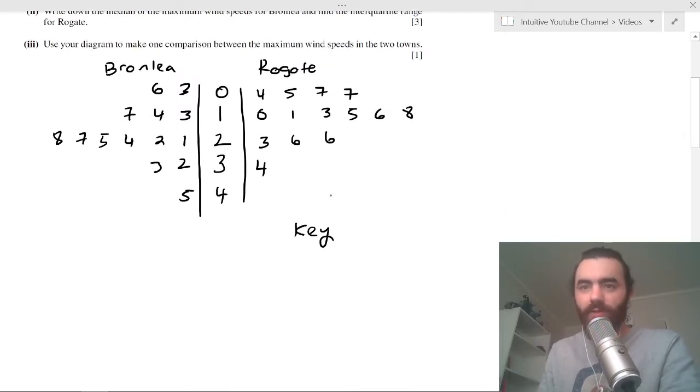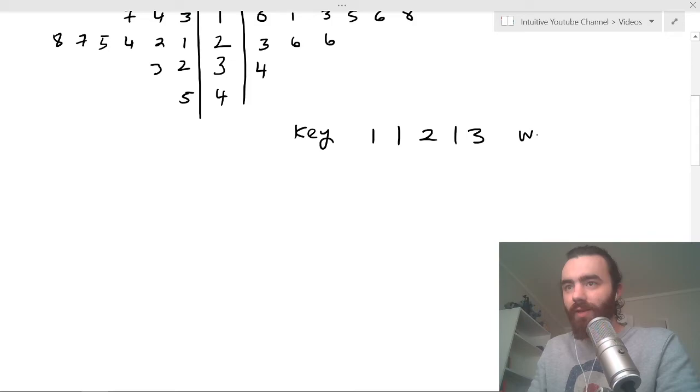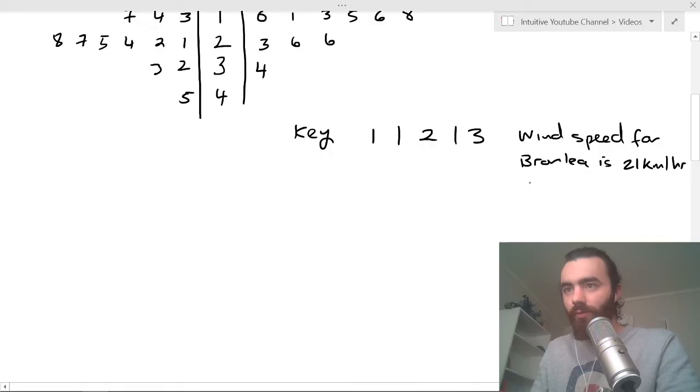And then you need to write a key here to tell your readers of the data what this actually means. You can pick something, let's say I don't know, we'll pick this 1, 2, 3. You can say this means that the wind speed for Bronley is, well this would mean 21 kilometers per hour, and then you know for Rogate is 23 kilometers per hour. So you just do a little description there, 21 for Bronley and 23 for Rogate. Cool, so that's that done, five marks there.